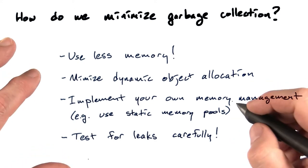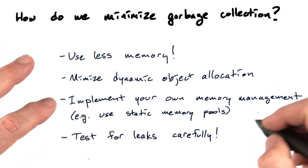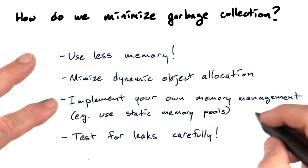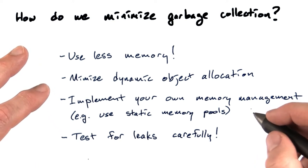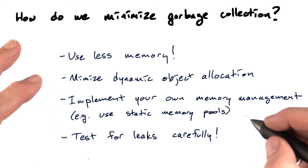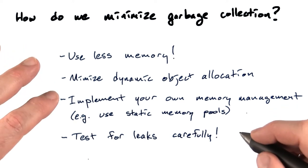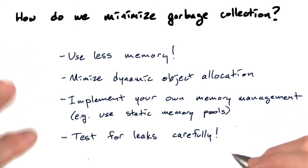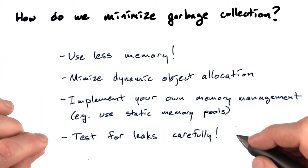One way to do that is to manage your own static object pools — implement your own memory management. For example, you can allocate an array of objects and hang on to that whole array, and just swap out which ones of those you're actually using.